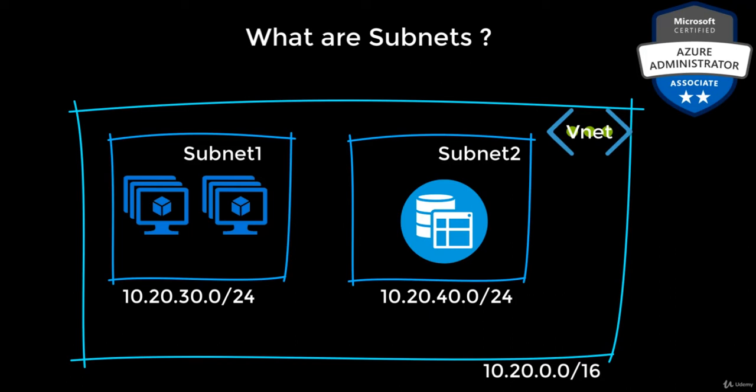Always remember that Azure will reserve the first three IP addresses and the last IP address in each subnet address range. That means if you are doing capacity planning with a CIDR block of slash 24, out of these 256 IP addresses, five of them are reserved. That means you can only use 251 IP addresses and assign them to your resources in the subnet.